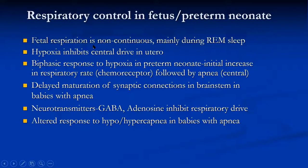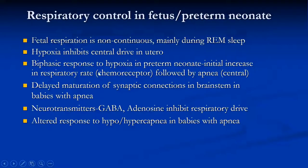The fetus does breathe in the womb, and fetal breathing movements are very important for lung growth. In conditions where fetal breathing is inhibited the lung may not develop normally — diaphragmatic hernia is an example where intestinal contents in the chest prevent normal fetal breathing movements so the lungs don't grow well. Fetal respiration is non-continuous and mostly seen during rapid eye movement sleep. Because the fetus is in a hypoxic environment, hypoxia inhibits central drive in utero, and the biphasic response to hypoxia seen in the premature neonate could be a continuation of this — just as persistent pulmonary hypertension is an extension of the in utero state, the paradoxical hypoxic inhibition of breathing is more active in preterms.